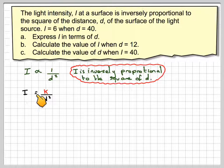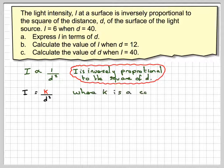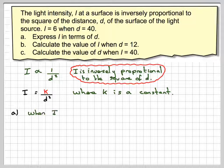Therefore, that will mean that I will be equal to some number divided by D squared, where K is a constant to be found. Now we can find the constant K by using this information here, because we know when I is 6, D is 40.